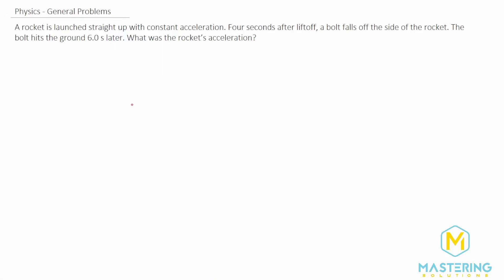Welcome to Mastering Solutions. This problem says that a rocket is launched straight up with constant acceleration. Four seconds after liftoff, a bolt falls off the side of the rocket and then hits the ground six seconds later. We need to figure out from just that what the rocket's acceleration was. This problem seems like it shouldn't be that hard, but it's actually pretty tricky if you don't know how to approach it.